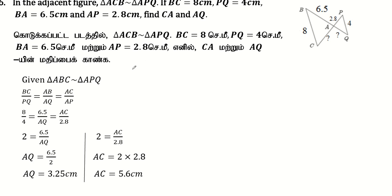We need to find CA and AQ. Given two triangles, we can establish that triangle ABC is similar to triangle APQ.